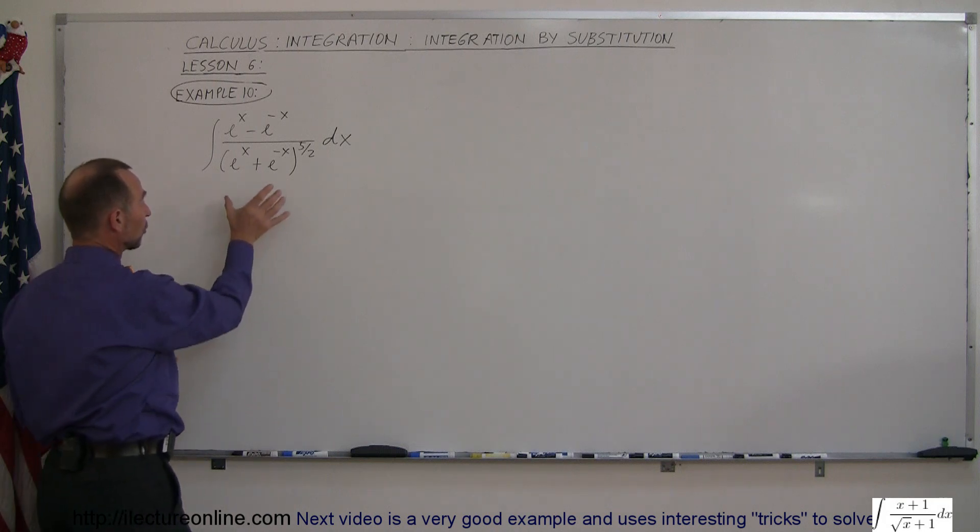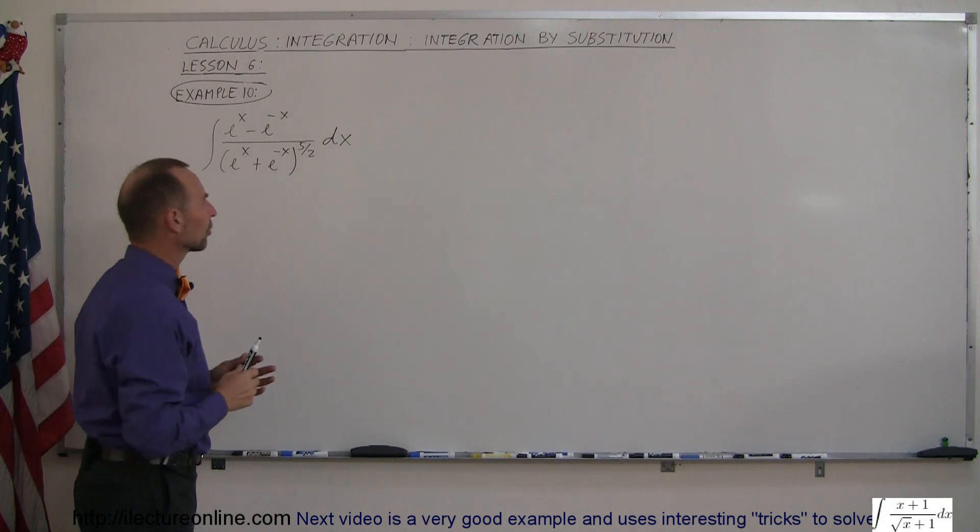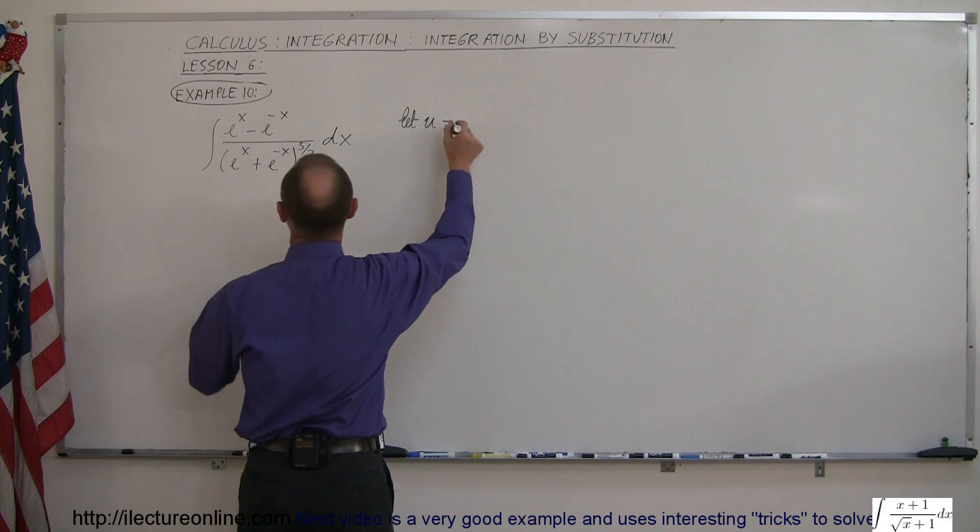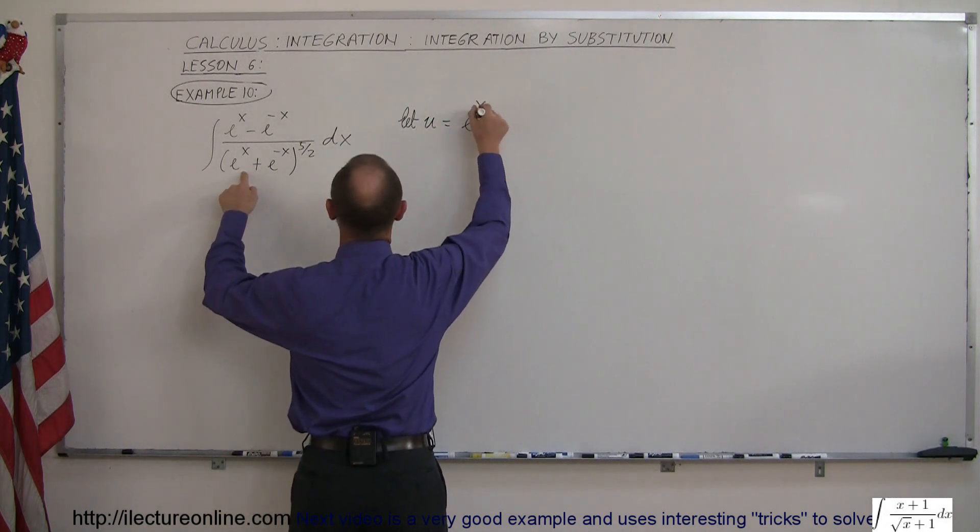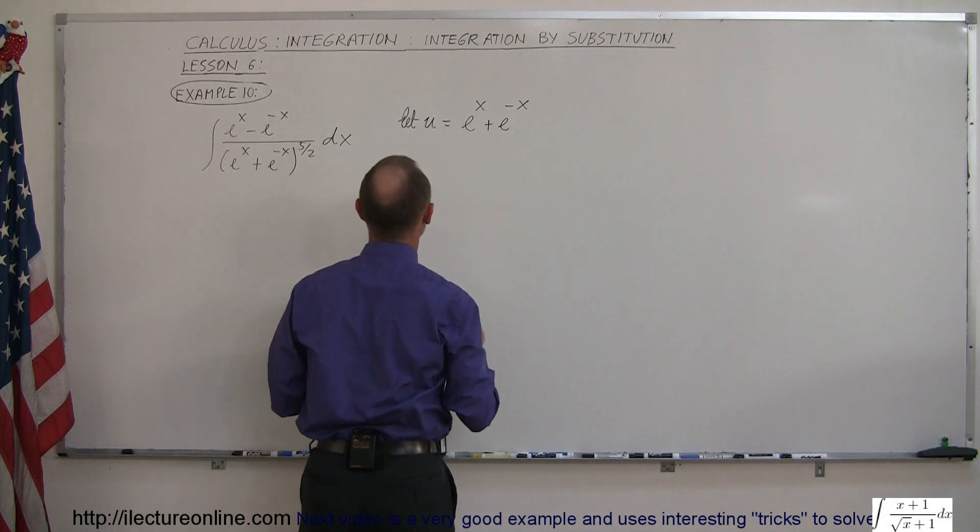So what we're going to do is we're going to substitute what's inside the parentheses here for u and then everything will just fall together. So we have let u equal e to the x plus e to the minus x.